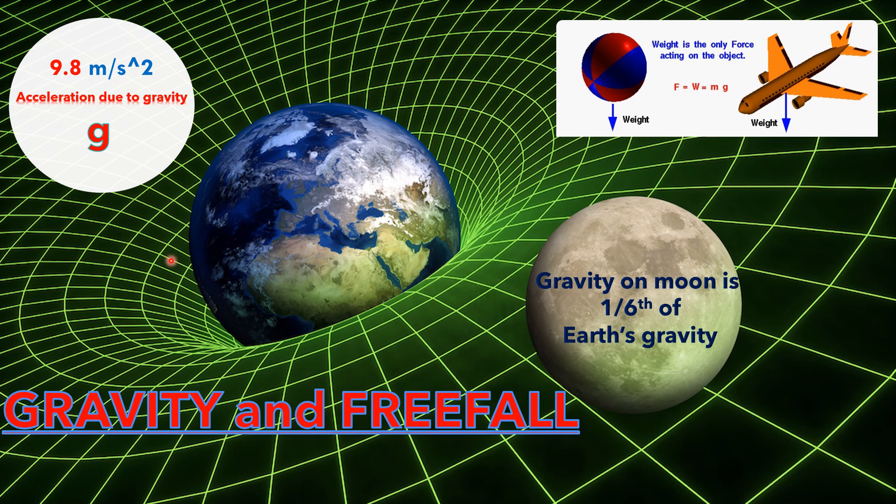As a result, time actually flows differently in regions with different gravitational strengths. As an example, time runs slowly near massive objects compared to regions with weaker gravitational fields.